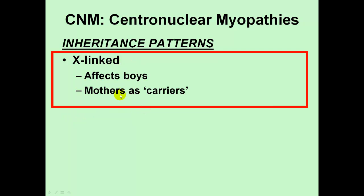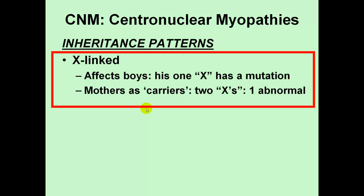For X-linked conditions, since a woman in general has two X chromosomes, if she has one that is normal and one that is abnormal, she is going to be a carrier for that abnormal version of the gene. The normal one will compensate for the one that's abnormal, and therefore the woman will be a carrier of the abnormality but will probably not have significant symptoms, or certainly not as full-blown as that of her affected son.